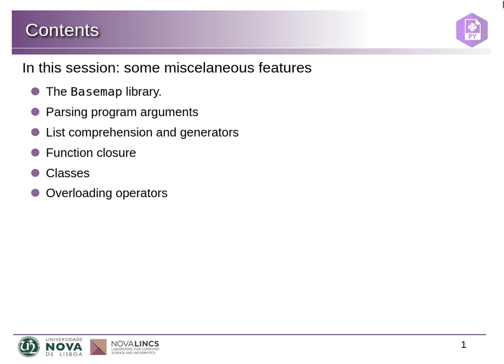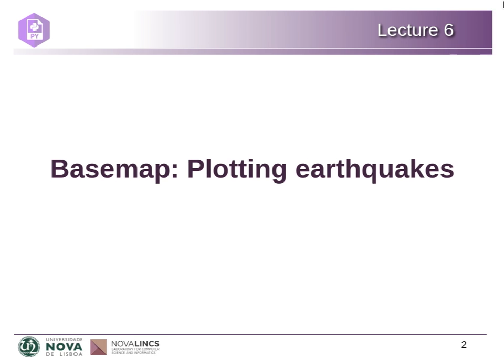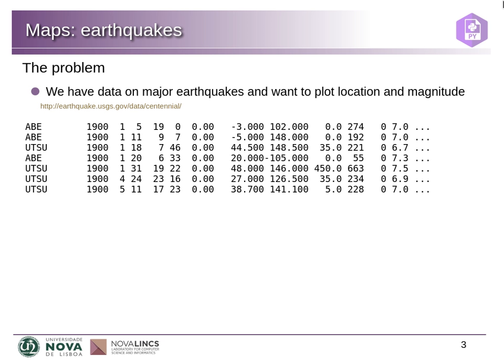Then list comprehension and generators — I saw a simple example of that in the morning and I'm going to detail this a bit more. Function closure, which is where you can have functions inside of other functions and use their values in the outer function. And classes and overloading, for when you want to organize more complex code. So let's start with the basemap library. We're going to use an example with earthquakes — the same file from the last exercise with major earthquakes in the 20th century.